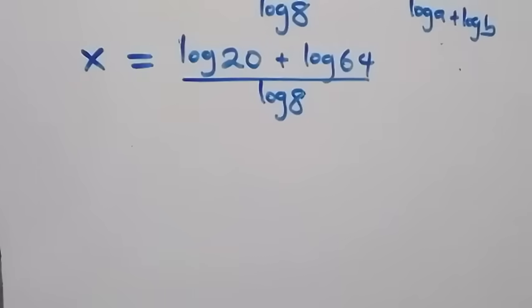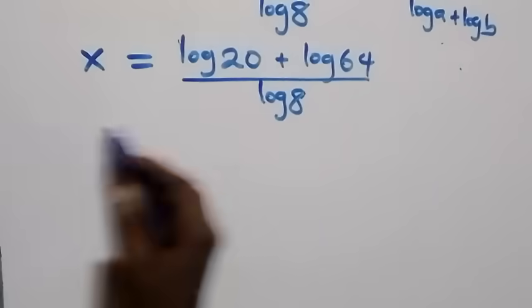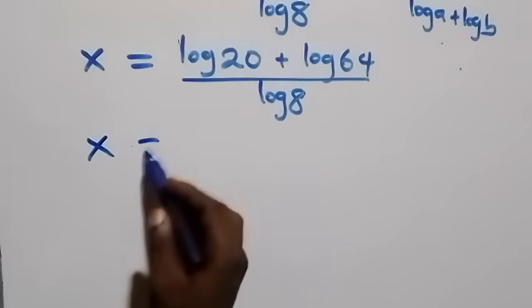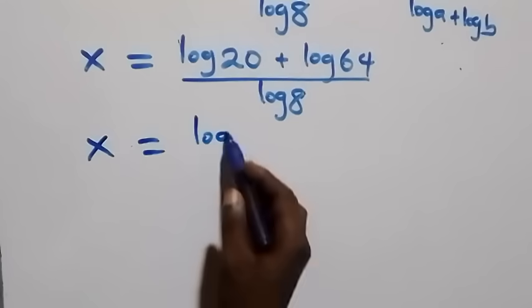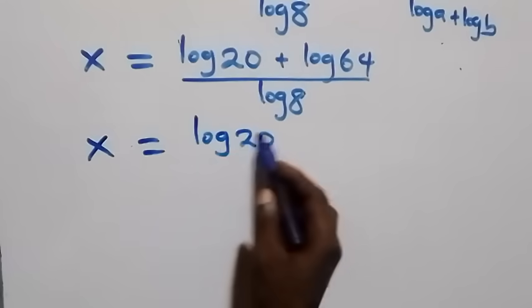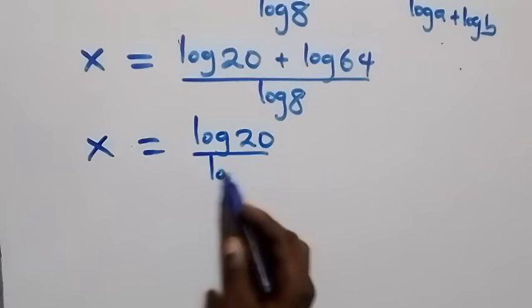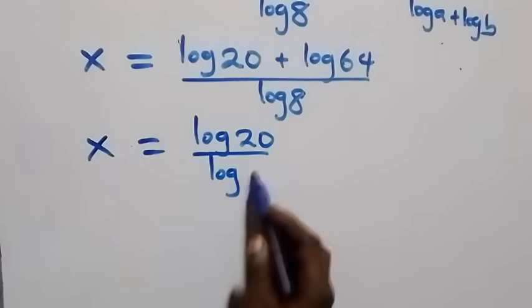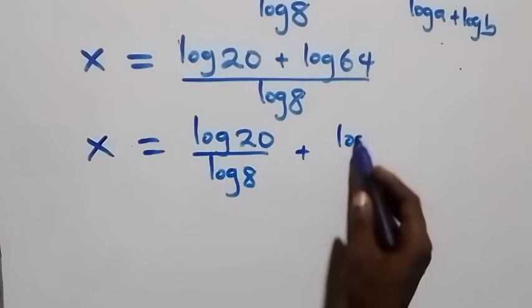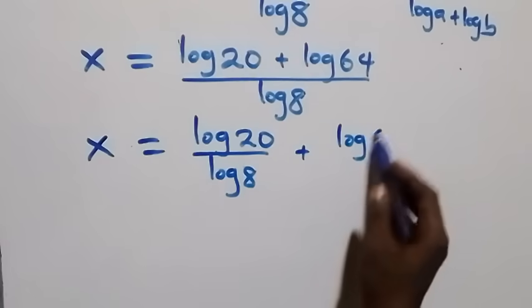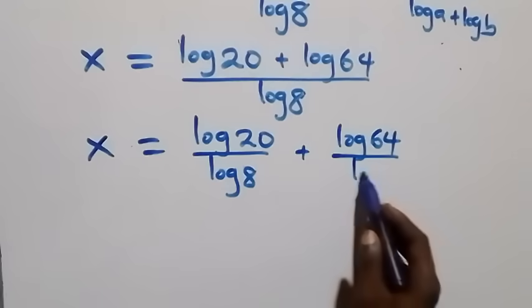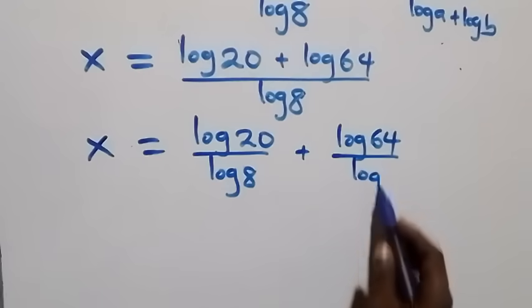We separate this into two fractions and have x equals log 20 over log 8, then plus log 64 over log 8.